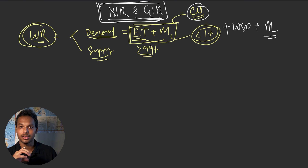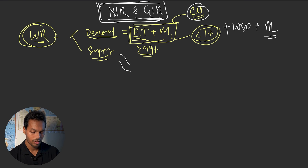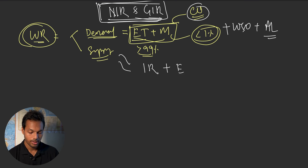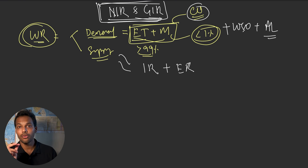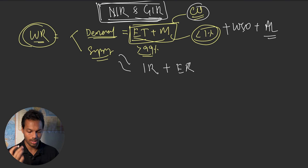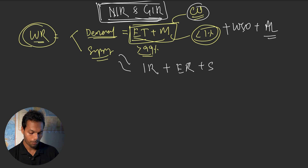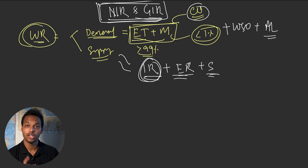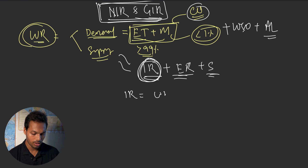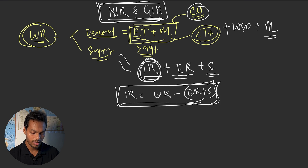On the supply side, water requirement consists of different components: the irrigation requirement — whatever quantity of irrigation we provide — then effective rainfall, which is the portion of rainfall actually used in consumptive use, and soil moisture contribution. So: irrigation requirement = water requirement minus effective rainfall minus soil moisture contribution.